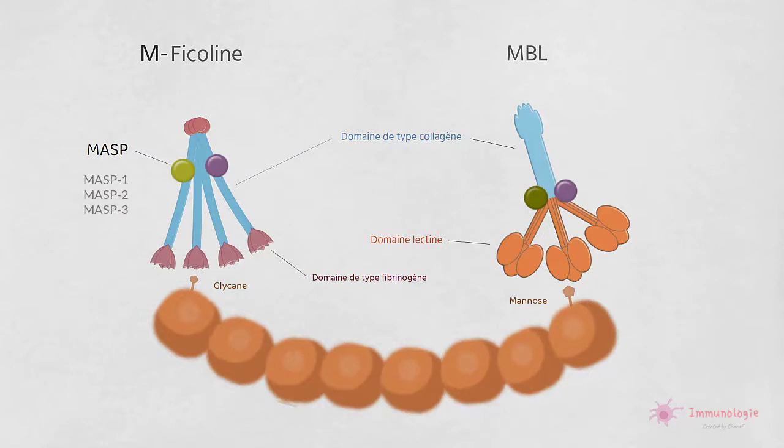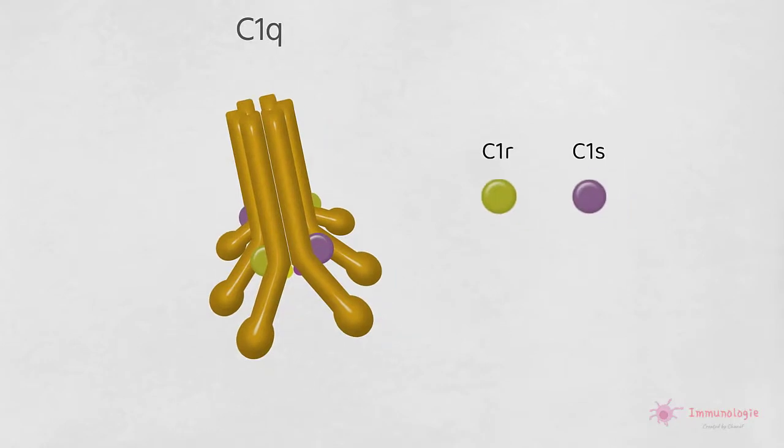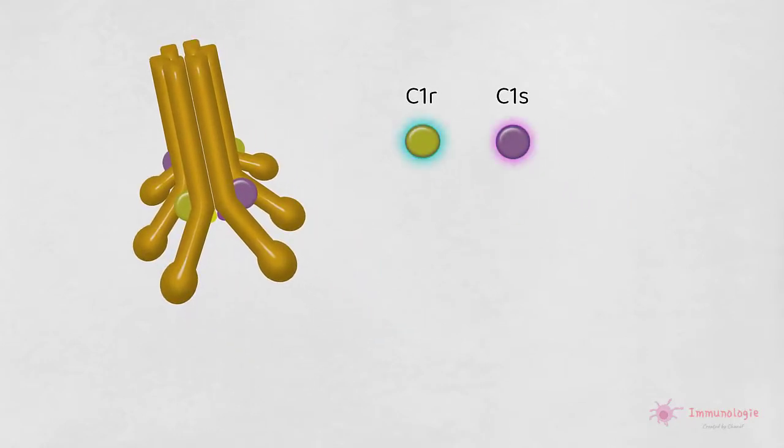qui sont structurellement homologues aux protéines C1R et C1S de la voie classique et remplissent une fonction similaire, à savoir le clivage de C4 et C2.